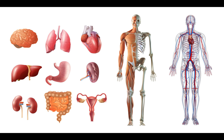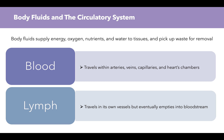We have pictures of individual organs on the left-hand side and some systems on the right-hand side. You may recognize the brain, lungs, heart, liver, stomach, intestines, kidneys, uterus, and what looks like an adrenal gland. In the middle we have the musculoskeletal system, composed of skeletal muscle and the skeleton or bones. And on the far right we have the circulatory system, which includes all our blood vessels and the heart.